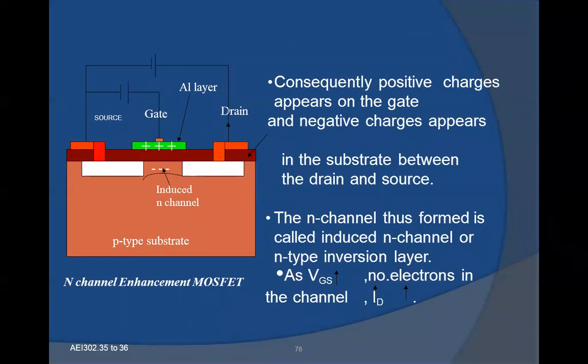When a positive voltage is applied to the gate, the capacitor begins to charge. Consequently, positive charge appears on the gate and negative charge appears in the substrate between drain and source. The N-channel thus formed is called the induced N-channel or N-type inversion layer. As VGS increases, the number of electrons in the channel increases, which is represented by the increase in drain current.